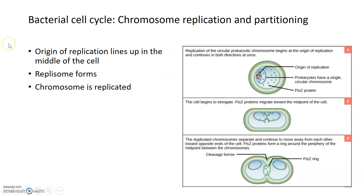For the bacterial cell cycle to start and for chromosome replication to begin, the origin of replication — the replication start site in the bacterial chromosome — has to line up along the midline of the cell. This orients the chromosome directly in the center so that as it replicates, it can split evenly into the two new daughters. Once the origin is lined up at the middle, the replisome forms — the combination of machinery and enzymes required for replication — and they are recruited to the origin so the chromosome can be replicated.